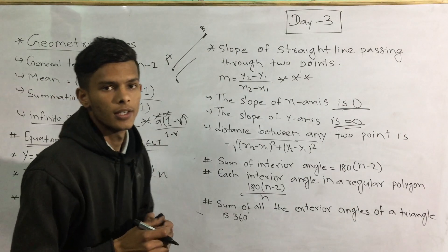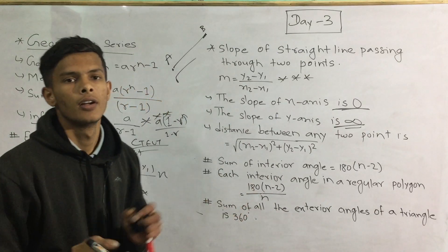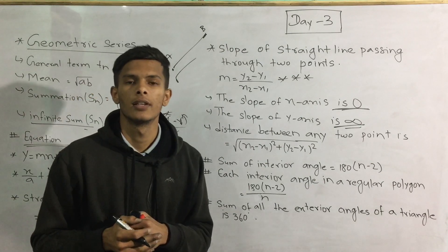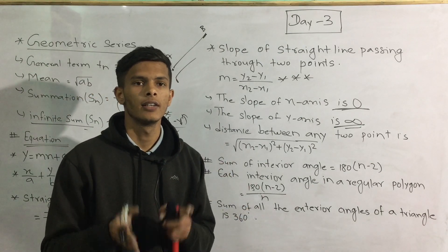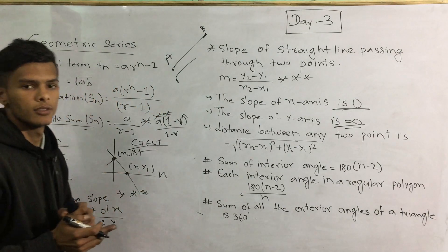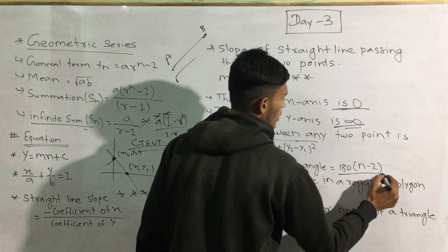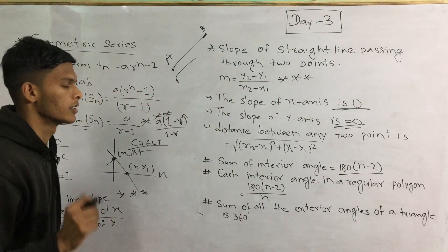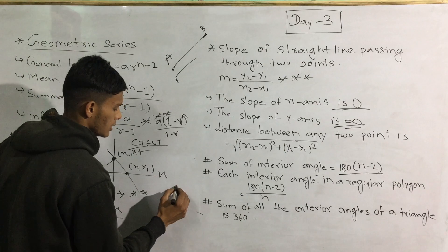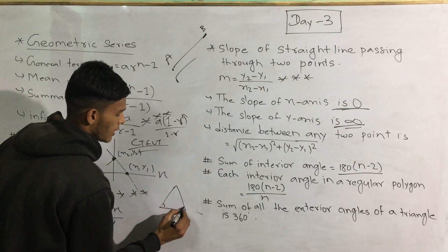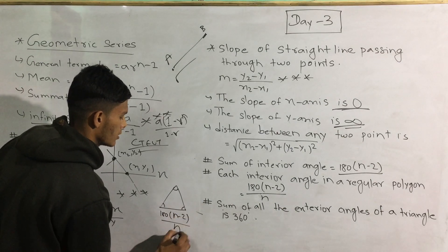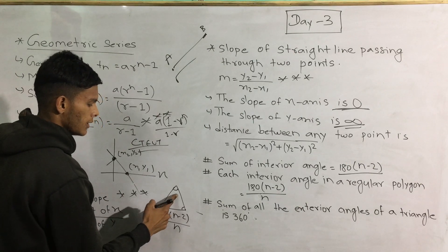Remember the most important sum of internal angles, which is the regular polygon internal angle: 180 into (n minus 2). This is the internal angle of a regular polygon: 180(n-2).